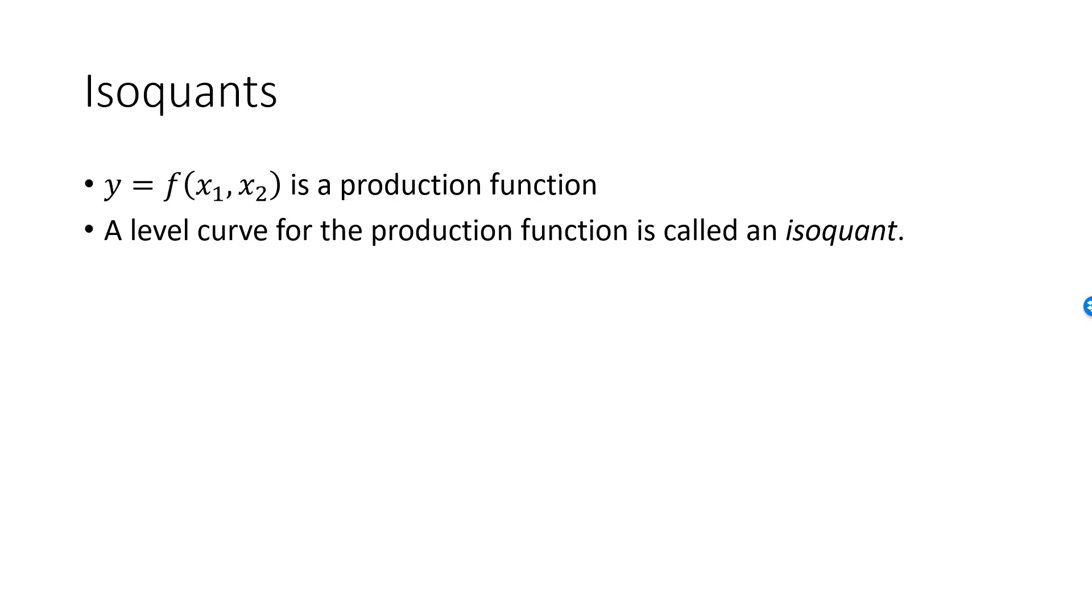We have one level curve for y equal to 5, one for y equal to 10, and so on. A level curve for a utility function was called an indifference curve. All consumption bundles on an indifference curve result in the same level of utility.